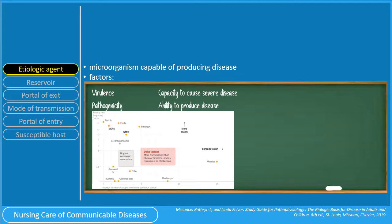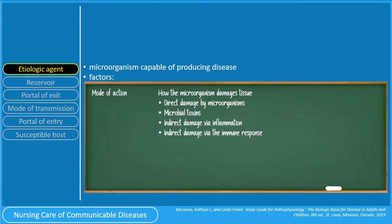The ability to produce disease is termed pathogenicity. Another factor when considering etiologic agent is the mode of action — it answers the question: how does the microorganism damage the tissue? Mode of action may include direct damage by microorganisms, damage by microbial toxins, or indirect damage via inflammation or via the immune response.